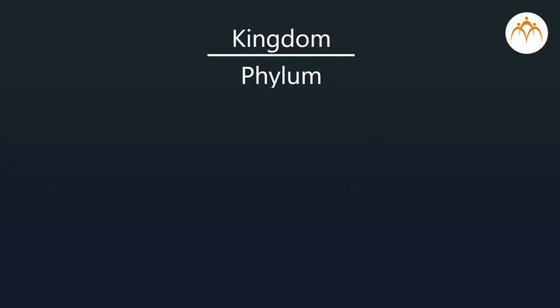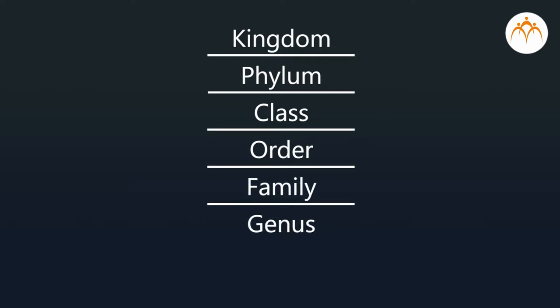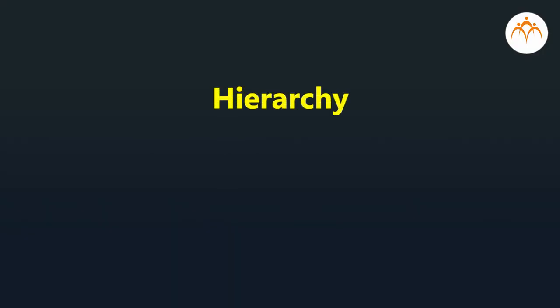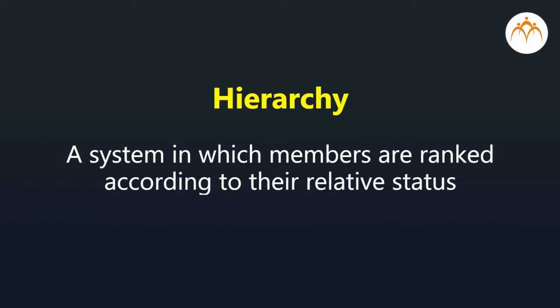This is a systematic and scientific study. In classification, we usually begin with the largest group, like the kingdom, and move down to smaller groups, like species. This is called hierarchy — a system in which members are ranked according to their relative status or importance.